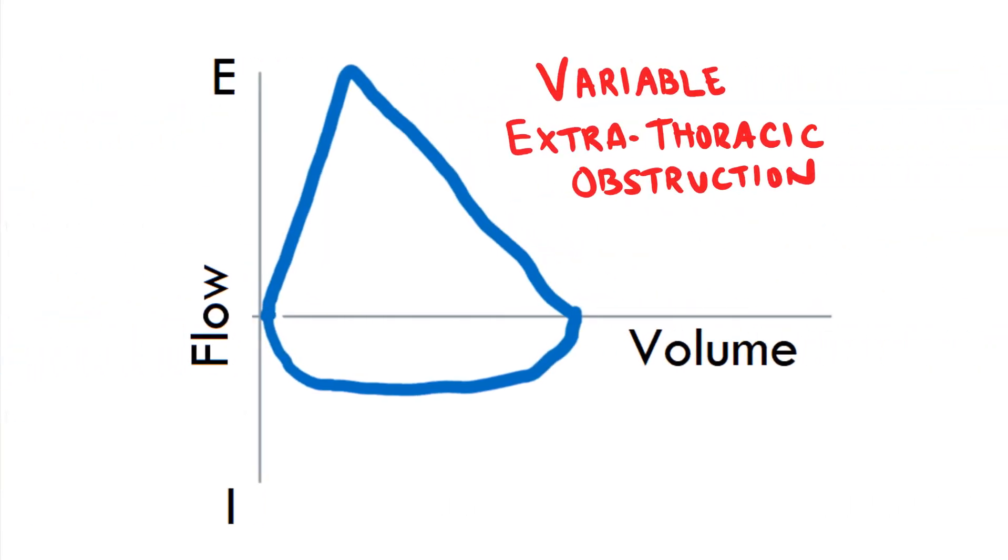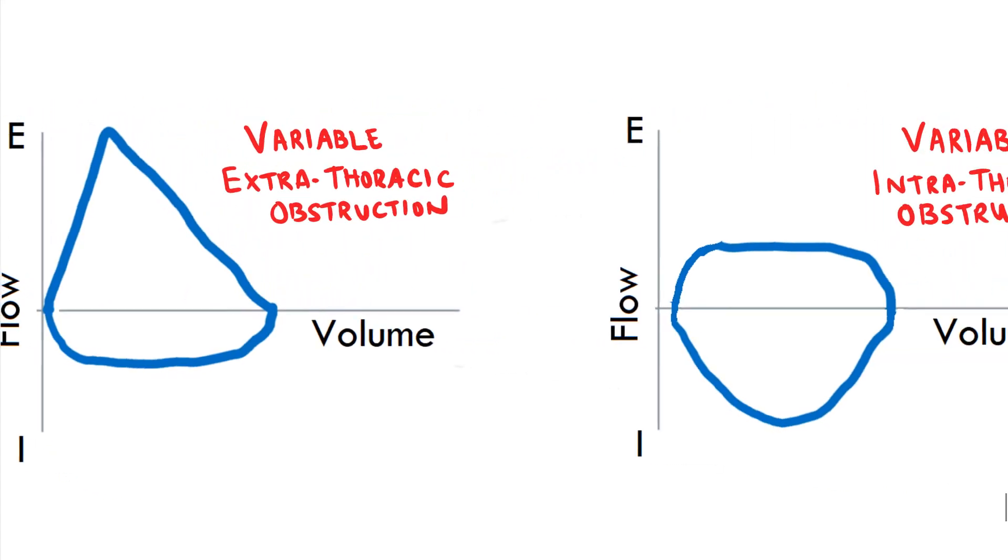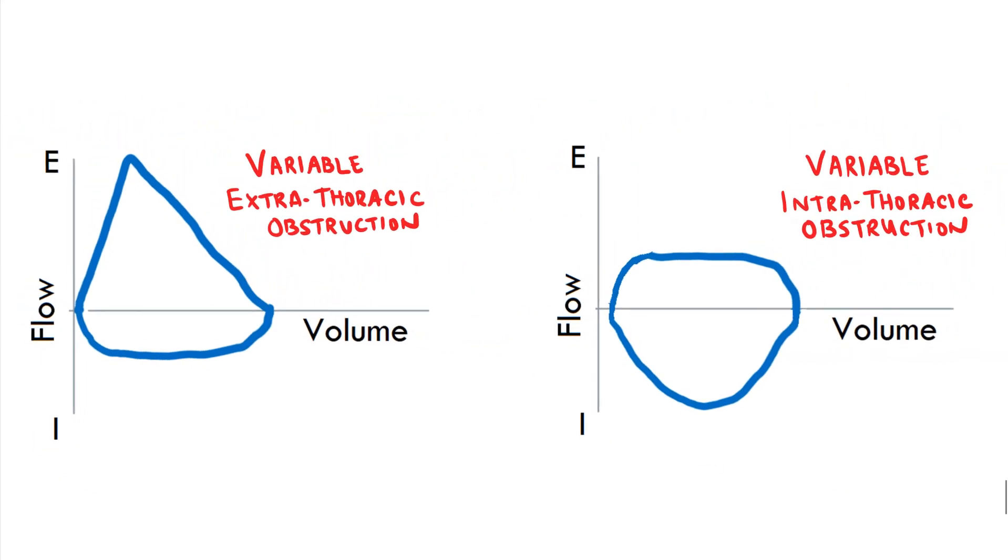Here's variable extrathoracic obstruction. The way I like to think about extrathoracic obstruction and intrathoracic obstruction is in extrathoracic obstruction, the inspiratory phase is affected. And on intrathoracic obstruction, the expiratory phase is affected.